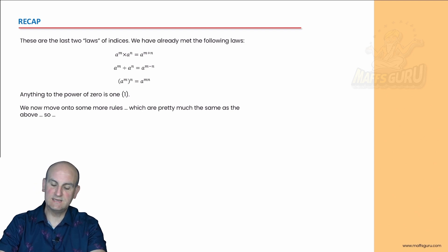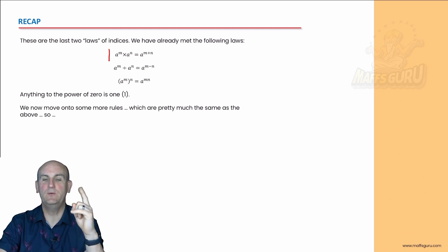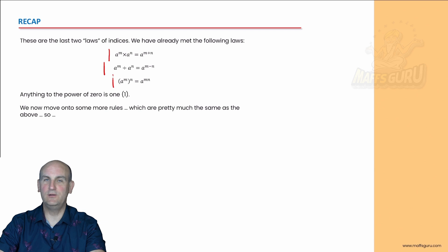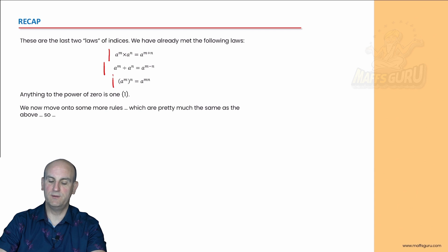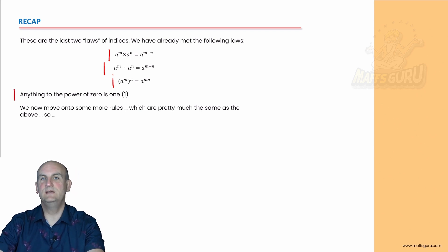The first rule says a to the m times a to the n is equal to a to the m plus n — basically when you multiply index notation, you add the powers. The second rule: when you divide index notation, you subtract the powers. The third rule: a to the m all to the n — you multiply those powers together. And anything to the power of zero is always equal to 1. Really important rule.